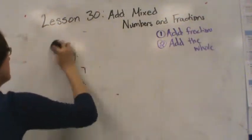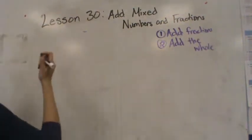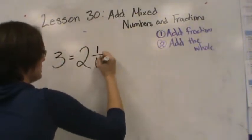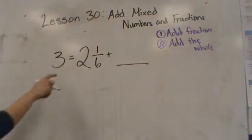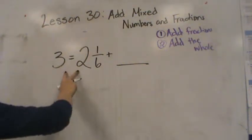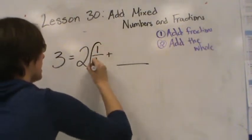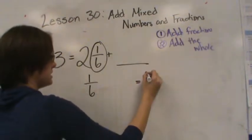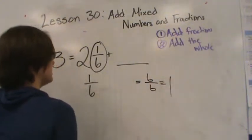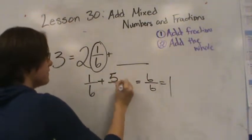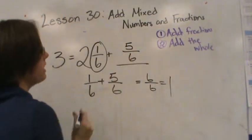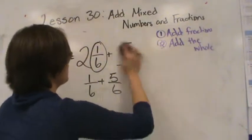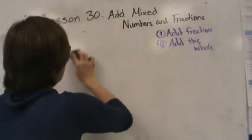Let's do another one just in case. Three equals two and one sixth plus something. I know two is just one whole away from three, so I need to look at one sixth — how many more sixths do I need to get to a whole, or six sixths? One sixth plus five sixths equals six sixths, and that equals one whole. Easy!